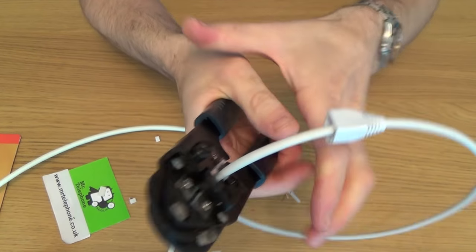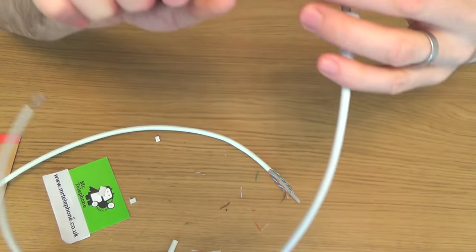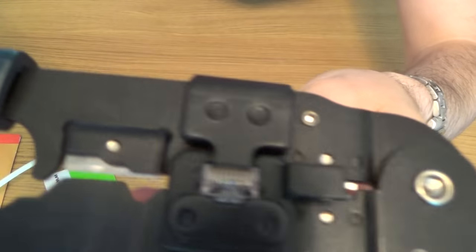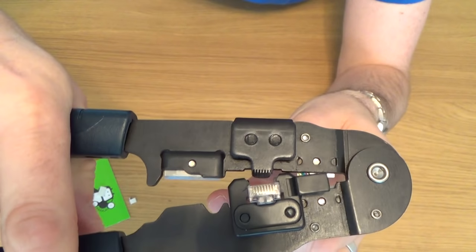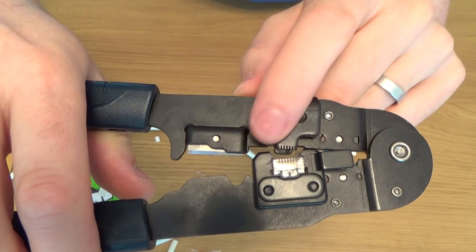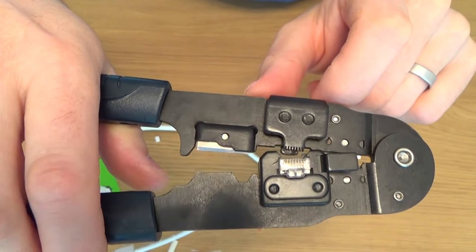And then just crimp down. You can use two hands if you want. Remember you can only go so far, and you can see this side here, the little jaws here have gone down on. Can you see there? The jaws are going in, pushing the pins down into the plug.